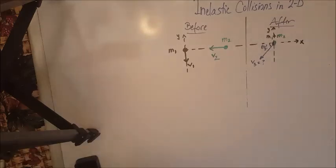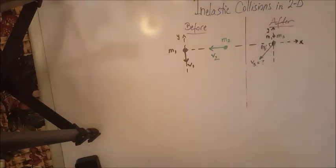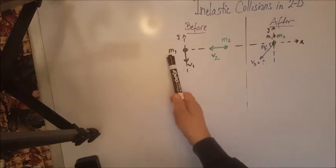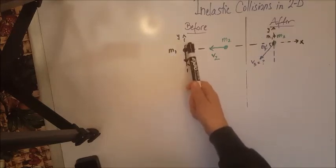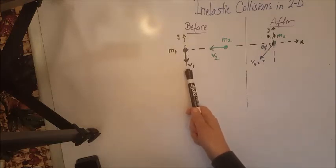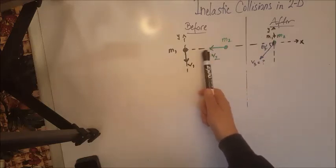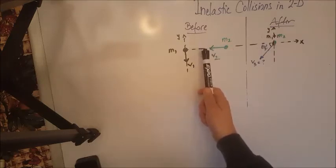Hello, today we are going to solve an inelastic collision in two dimensions problem. What we have here is an object of mass M1 that is moving at a vertical velocity V1 downwards — south if you will. We have another object M2 moving horizontally at velocity V2 westward.